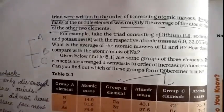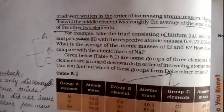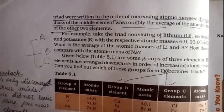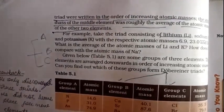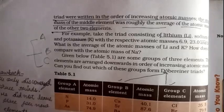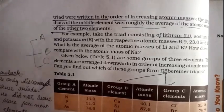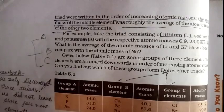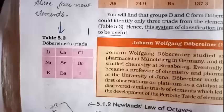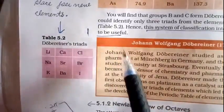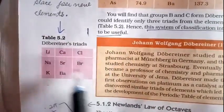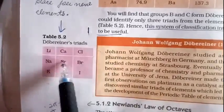What were the drawbacks? Dobereiner could only form 3 triads for the known elements — the other elements were not given any grouping. Additionally, no space was left so that newly discovered elements could be accommodated. These are the main drawbacks of Dobereiner's Triads.